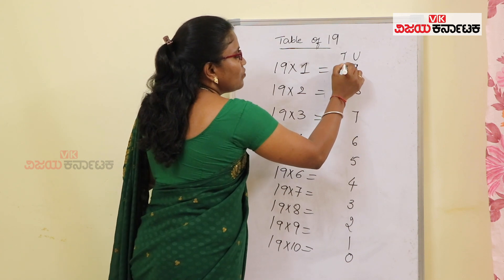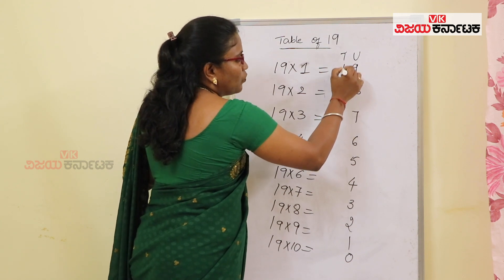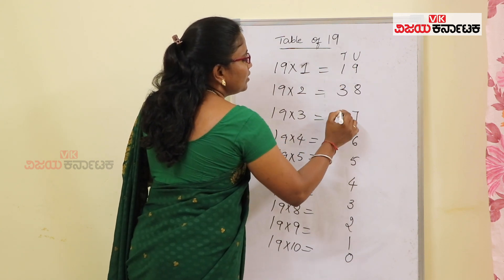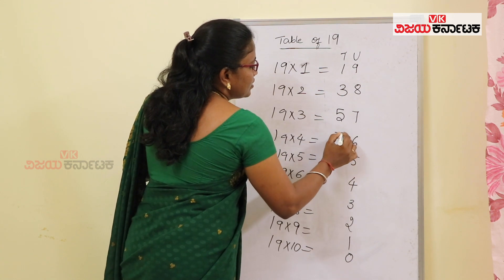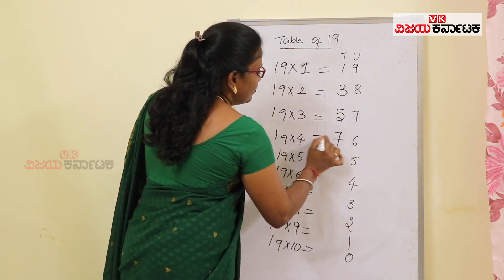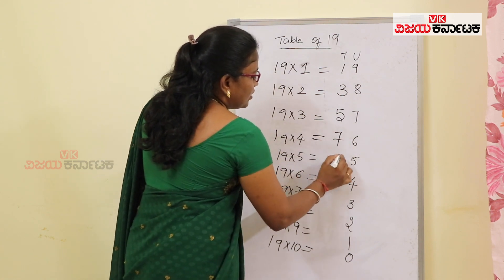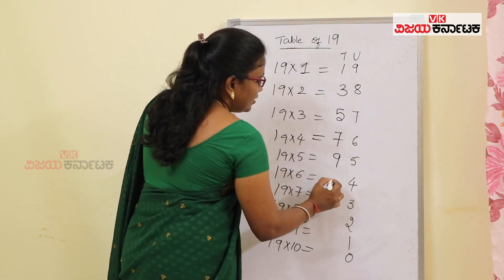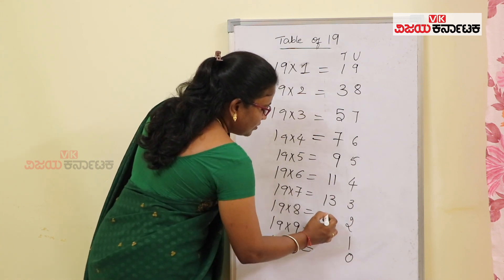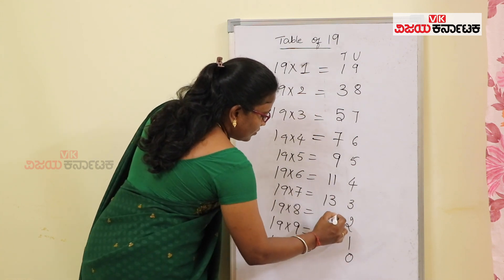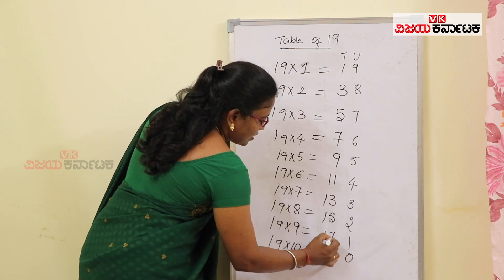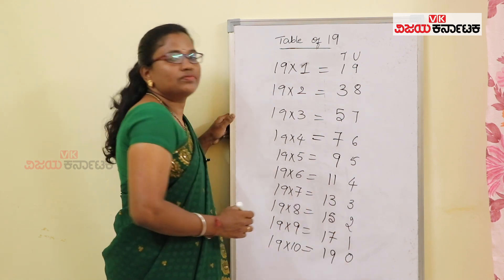Let's start from 1. So: 1, 3, 5, 7, 9, 11, 13, 15, 17, 19.